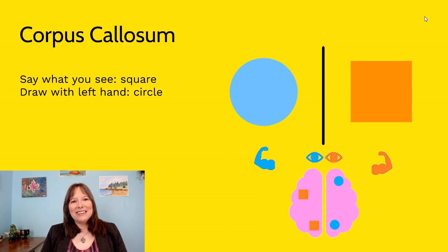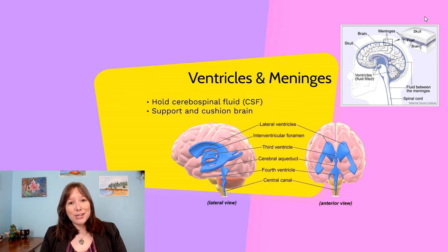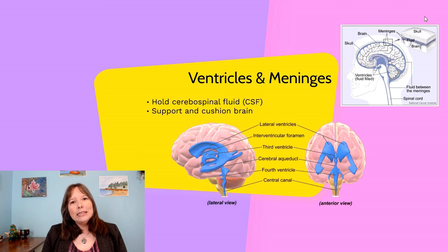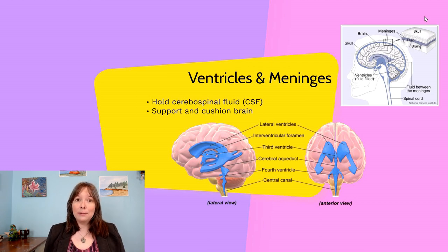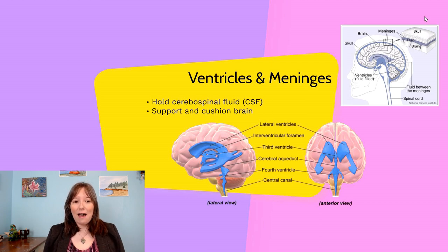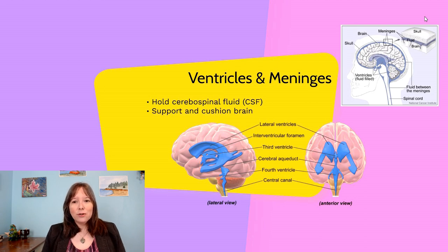This highlights the importance of the corpus callosum. In addition to the brain tissue itself, it's important to note that our ventricles and meninges play a vital role. Both the ventricles, the meninges, and the spinal column contain cerebrospinal fluid, or CSF, which is really important for supporting and cushioning the brain.